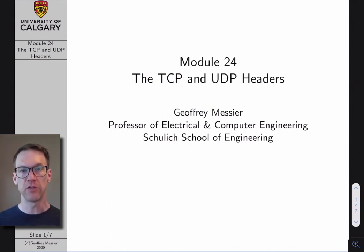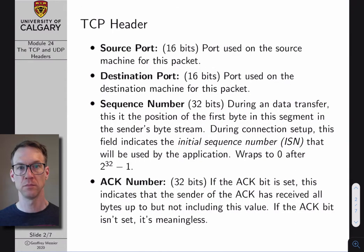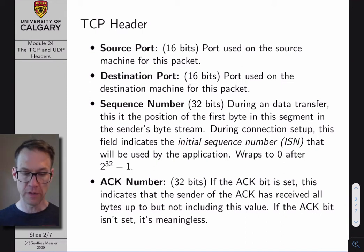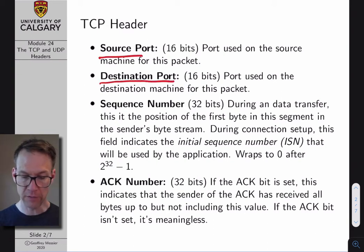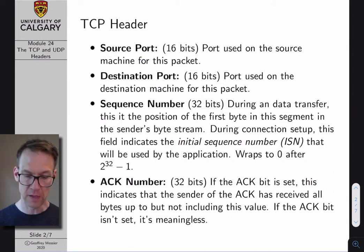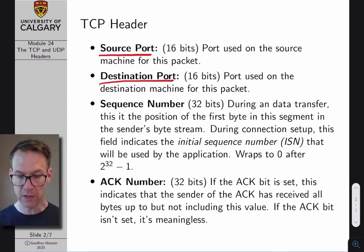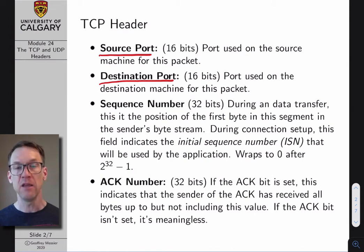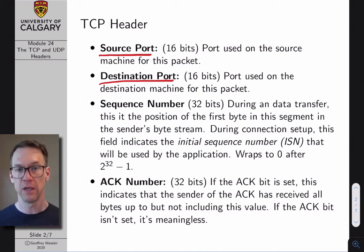I'm also going to introduce very briefly the UDP standard, talk about how it differs from TCP and what its header looks like. So let's dive right in. The first two fields in the TCP header are the port numbers: a source port number and a destination port number. Port numbers are 16 bits as we've already discussed. The source port is the port number on the machine where the packet is being generated; the destination port is the port number we want to connect to on our destination machine. For example, if our computer was connecting to a web server, the destination port would be port 80, and the source port would be whatever randomly generated port number our operating system assigned to this particular TCP connection.